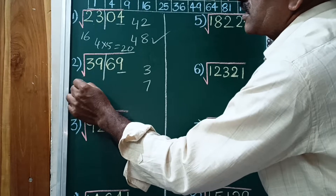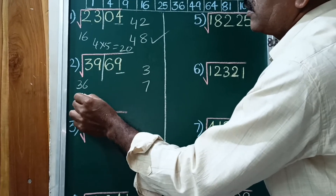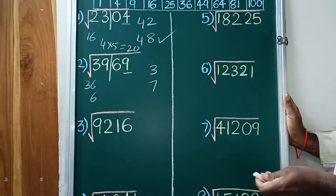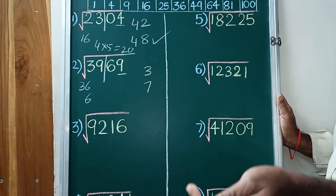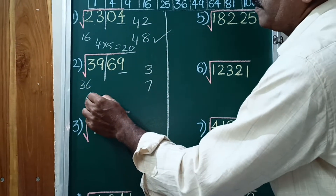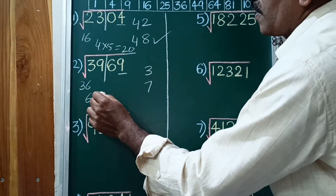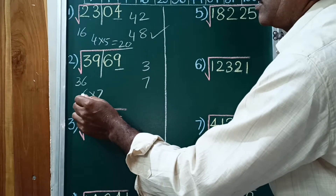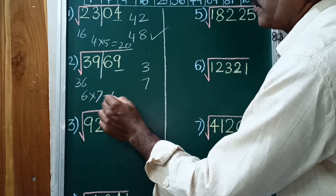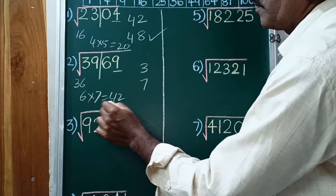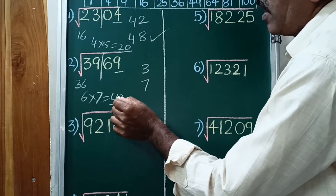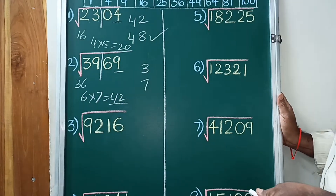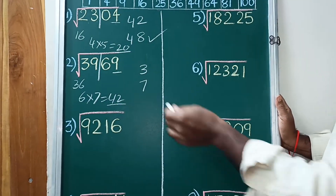36 has square root 6. The next number after 6 is 7. Multiply: 6 times 7 equals 42. Compare 42 to 39 — 39 is less than 42.